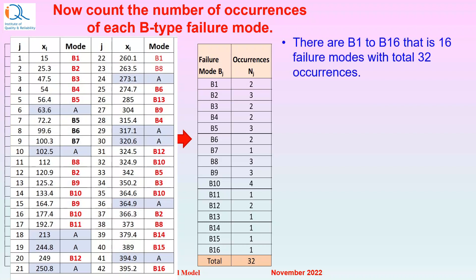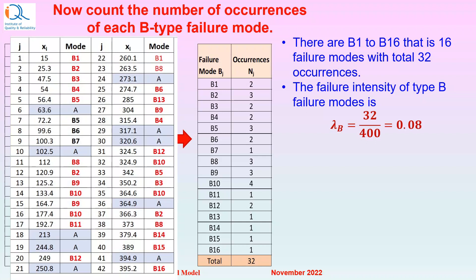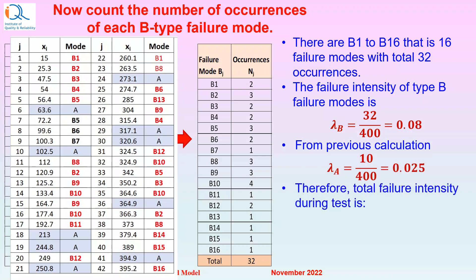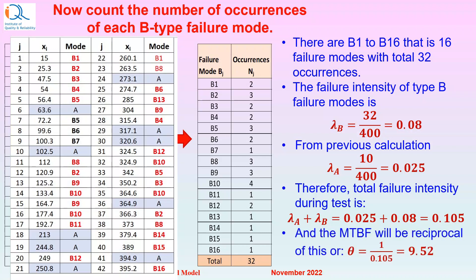There are B1 to B16 failure modes with total 32 occurrences. The failure intensity of Type B failure modes is lambda B = 32 divided by 400 hours of test time, which equals 0.08. From the previous calculation, lambda A was equal to 0.025. Therefore, the total failure intensity during the test is the sum of these two, which equals 0.105. And the MTBF is the reciprocal of this failure intensity, which is 9.52.